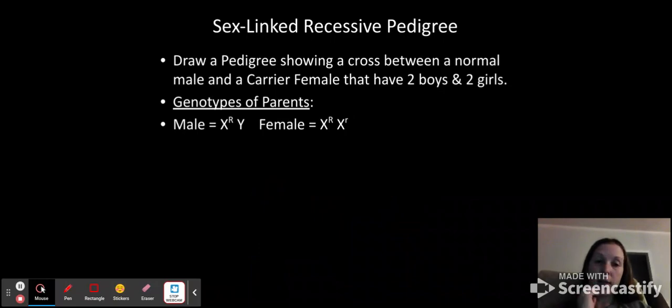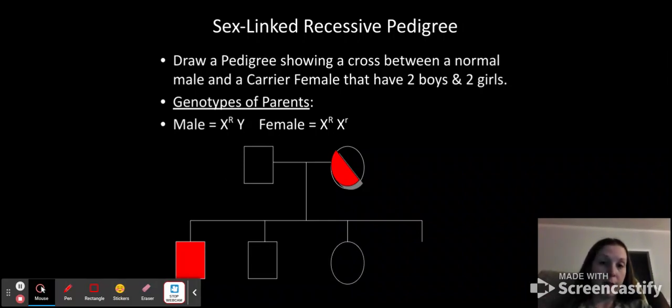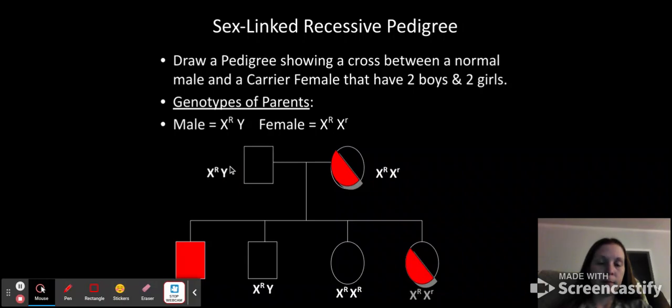And then sex linked. Remember, we have to write the X's and the Y's here. Two boys, two girls, normal male, carrier female. So that means since the male is normal, capital R would be normal. Again, it's recessive. So you have to have that female would be half shaded, two boys, two girls. One of these boys will be affected because they'll get the lowercase R from the mom. One will not be affected because they'll get the uppercase R. One girl will be not affected at all because she'll have both uppercase R's. And one should be a carrier because she'll get the uppercase from the dad and the lowercase from the mom.